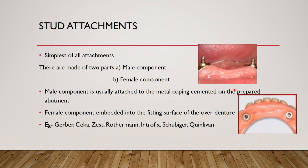Coming to stud attachments — the simplest type. There is a male and a female component. The male component goes into the female component. The female component is placed in the denture using a pickup impression: an O-ring (metal or silicone) is placed, an impression is taken, and the acrylic settles around the ring. Space must be created in the denture for the rings to be embedded in acrylic.